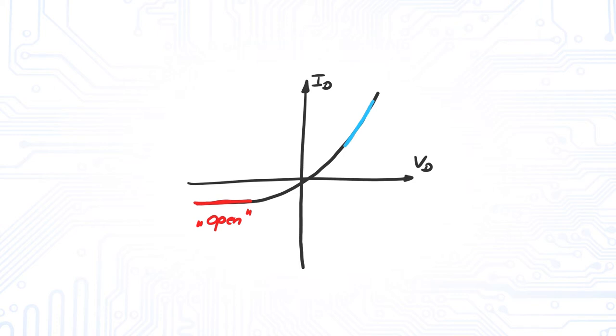Towards positive voltages, the current increases exponentially. The increase is so high that we can consider this part to be a short.